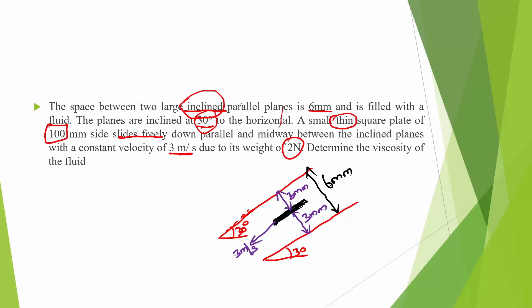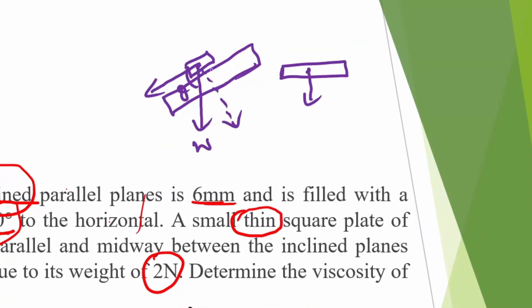The weight of any body always acts vertically downwards. If you keep a book on an inclined table, the book slides down because the weight is resolved into two components: W sinθ along the surface and W cosθ perpendicular to it. The component W sinθ acts along the inclined surface, causing the body to move along it.